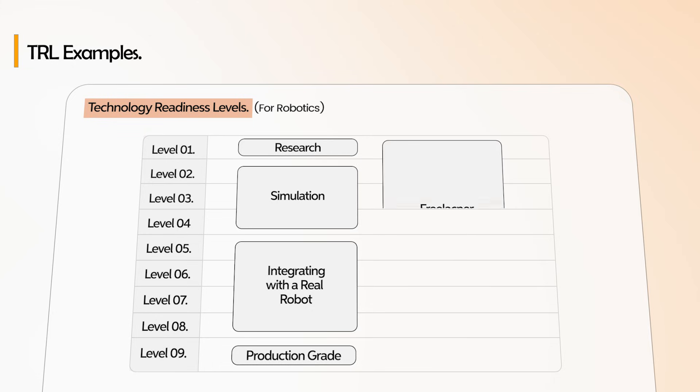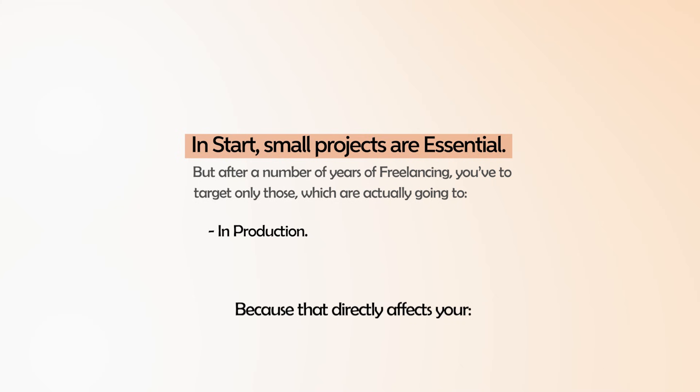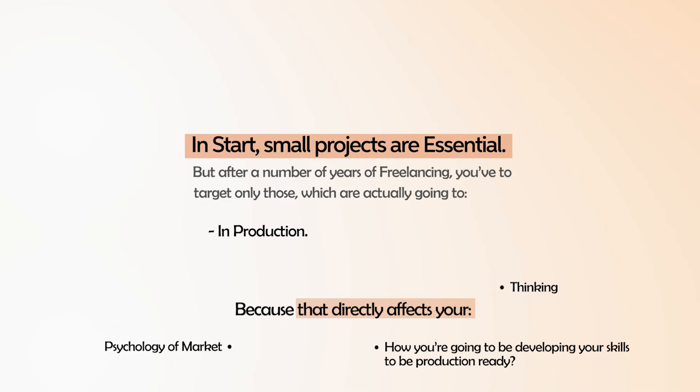There are very few production-grade robotics companies that have robots actually in production — those are on TRL 9. As a freelancer, you can fit into TRL 7, 8, and 9, something that you own as a product. You have to understand: if you are doing projects that are never going to be in production, this project is not going to make you progress longer. In the start, small projects are essential, but after a number of years of freelancing, you have to target only those which are actually going to be in production, because that directly affects your thinking, your psychology of the market, and how you develop your skills to be production-ready.